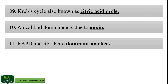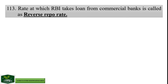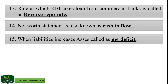RAPD stands for Random Amplified Polymorphic DNA and RFLP stands for Restriction Fragment Length Polymorphism. Method of transferring gene by placing on metal surface is biolistic method or gene gun method. Rate at which Reserve Bank of India takes loan from commercial bank is called reverse repo rate. Net worth statement is also known as cash inflow. When liabilities increase, the excess is called net deficit.